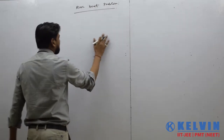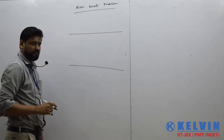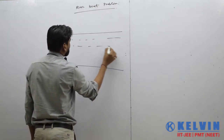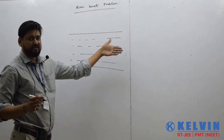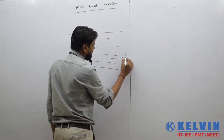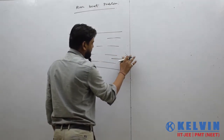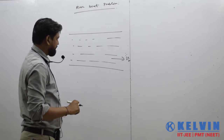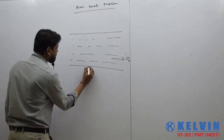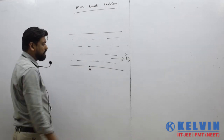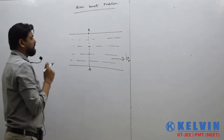In the river boat problem, there are two banks of a river and the river is flowing in a certain direction. This direction of flow is referred to as downstream, and it has velocity of river vr. A boatman starts from point A and the directly opposite point is point B.